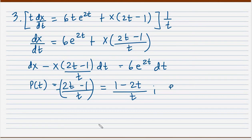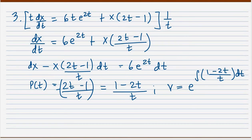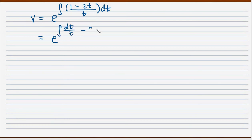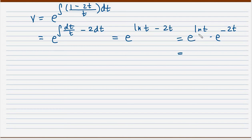Therefore, my integrating factor v is equal to e raised to the integral of (1 minus 2t)/t dt. Distributing dt over t, this becomes the integral of dt/t minus 2 dt, which gives e raised to (ln t minus 2t), which is also ln t times e^(-2t). Since e^(ln t) is simply t, the integrating factor is t·e^(-2t).